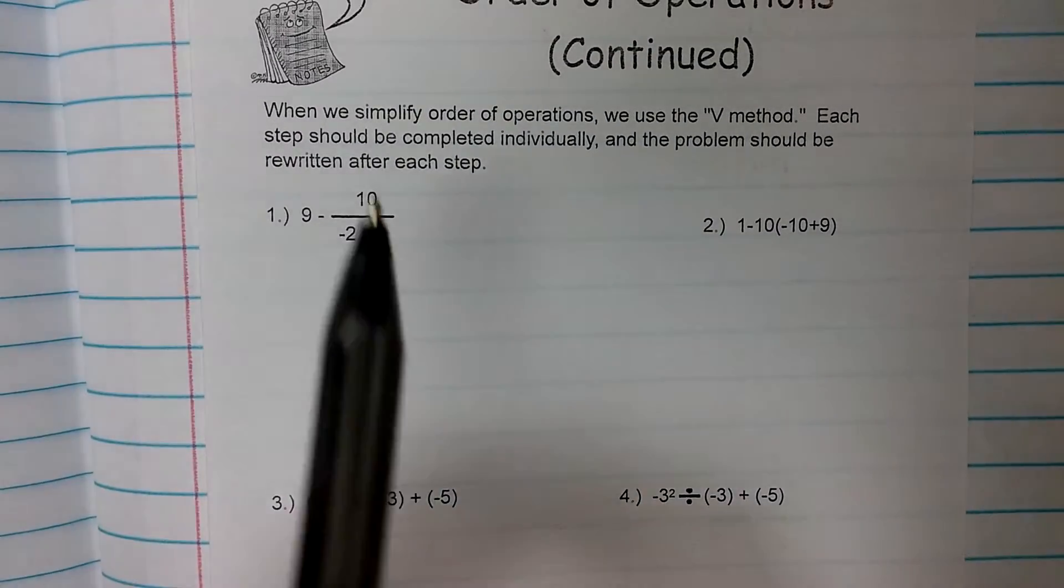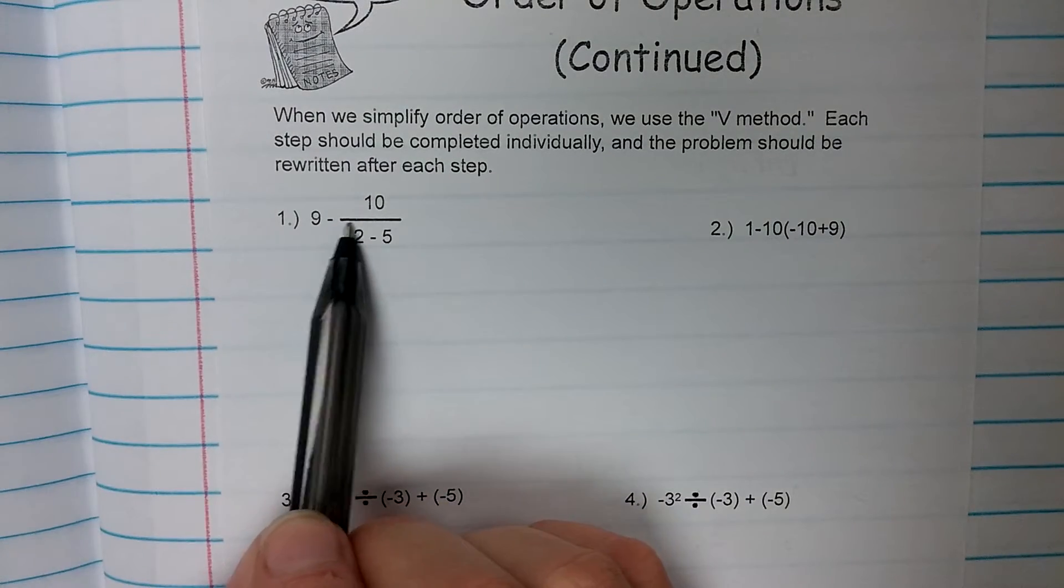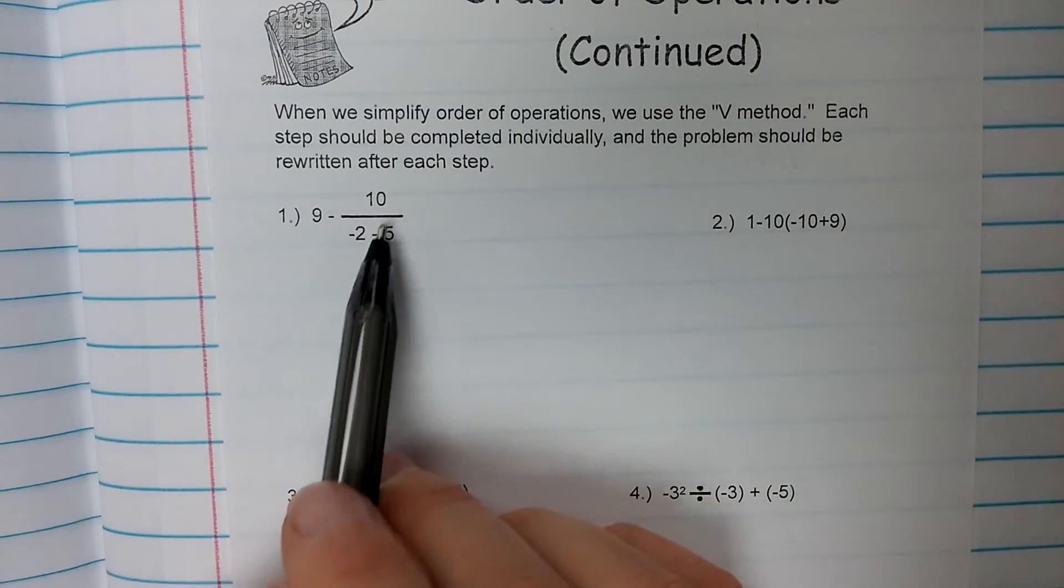All right, let's move on to a couple of examples. Example number one. So if we take a look here, we have a division bar. That counts as a grouping symbol. So we need to make sure that we treat it as such.